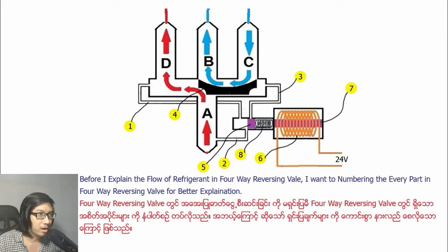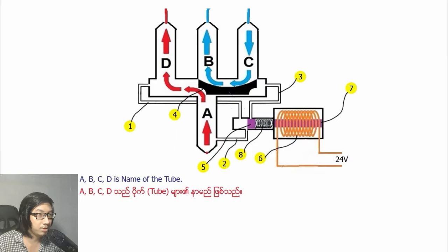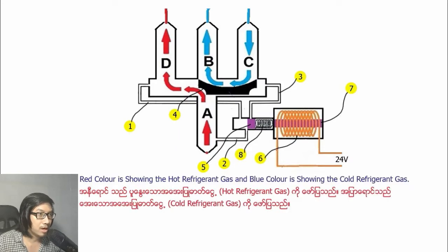I want to talk about the 4-way reversing valve used in air conditioning and refrigeration systems. Before I explain the flow of refrigeration in the 4-way reversing valve, I want to number and label every part for further explanation. ABCD are the names of the tubes. Red color shows hot refrigerant gas and blue color shows cold refrigerant gas.